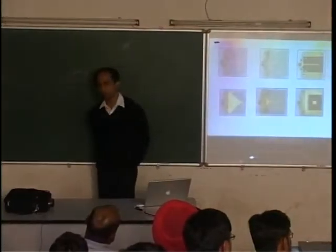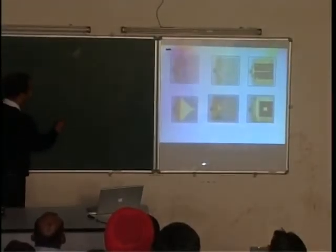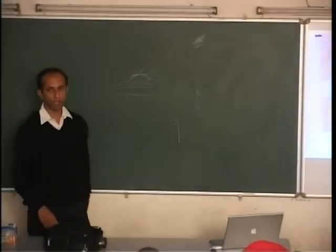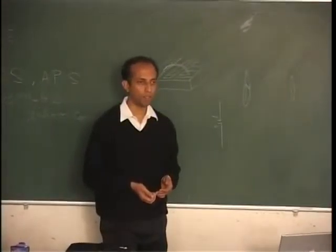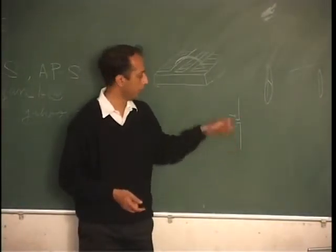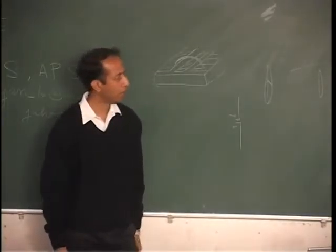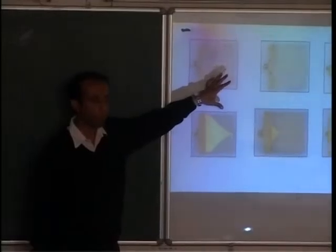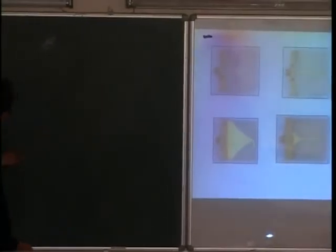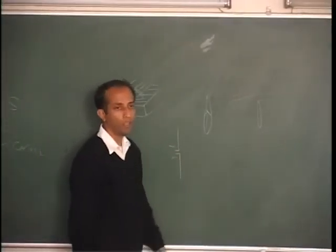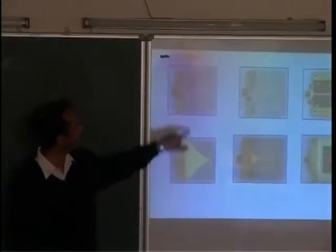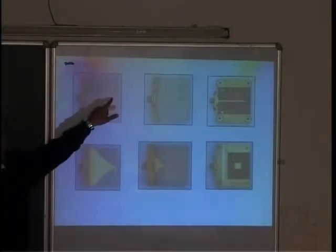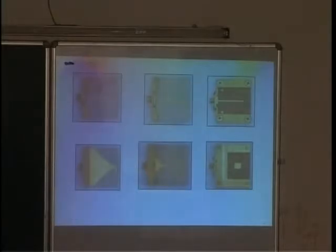This is a printed dipole antenna — the first antenna that one typically teaches. The dipole is just two wires, and you may have heard of the term half-wavelength dipole. The length is half a wavelength because that is the lowest frequency at which this antenna works nicely. This is the printed version of that. One half of the dipole is on the top side of the substrate and the other half is on the bottom side. The feed is a microstrip line.